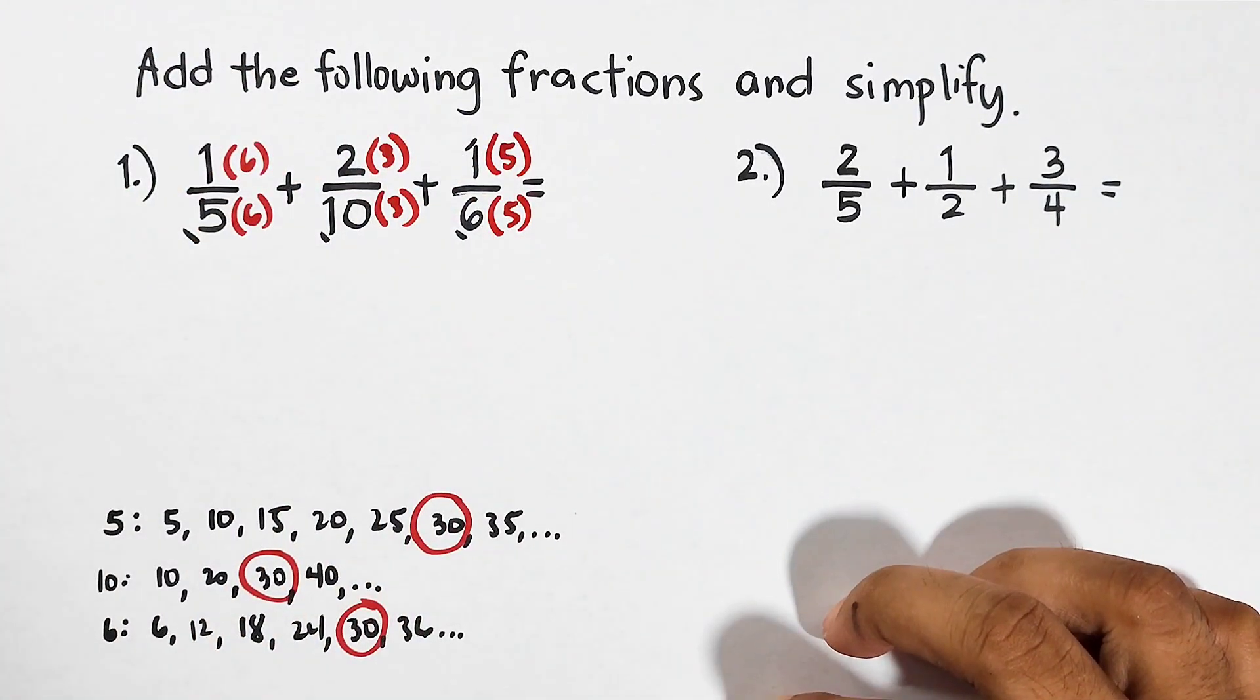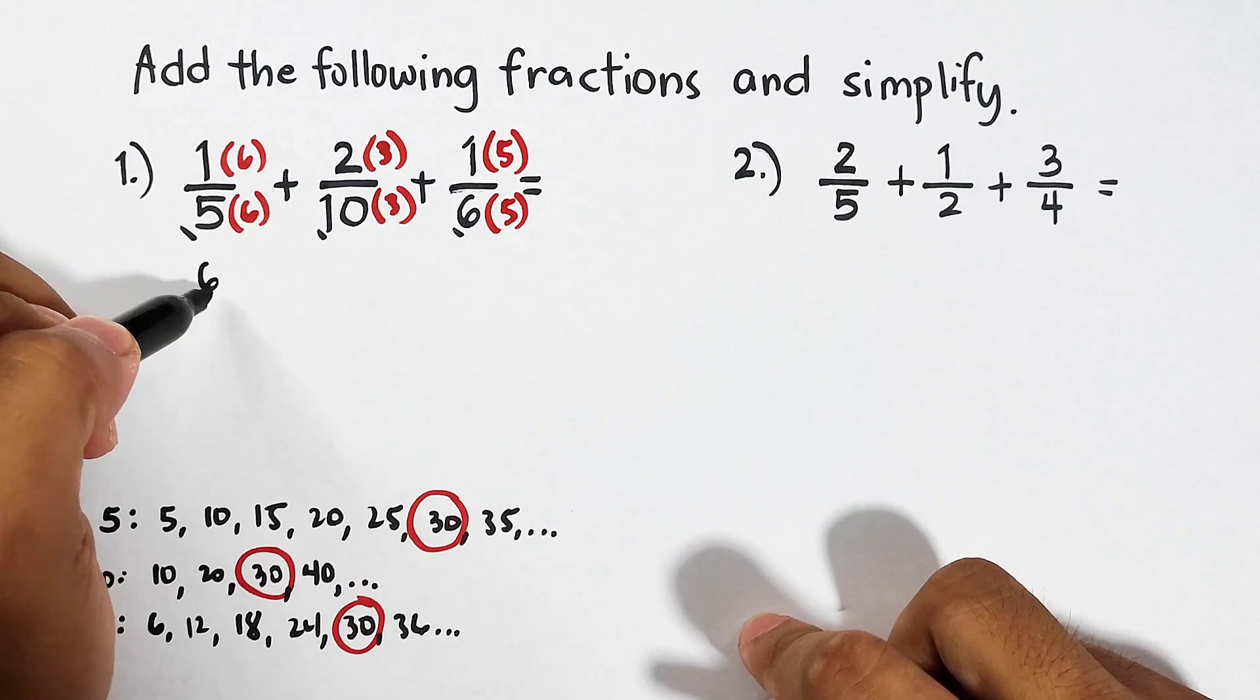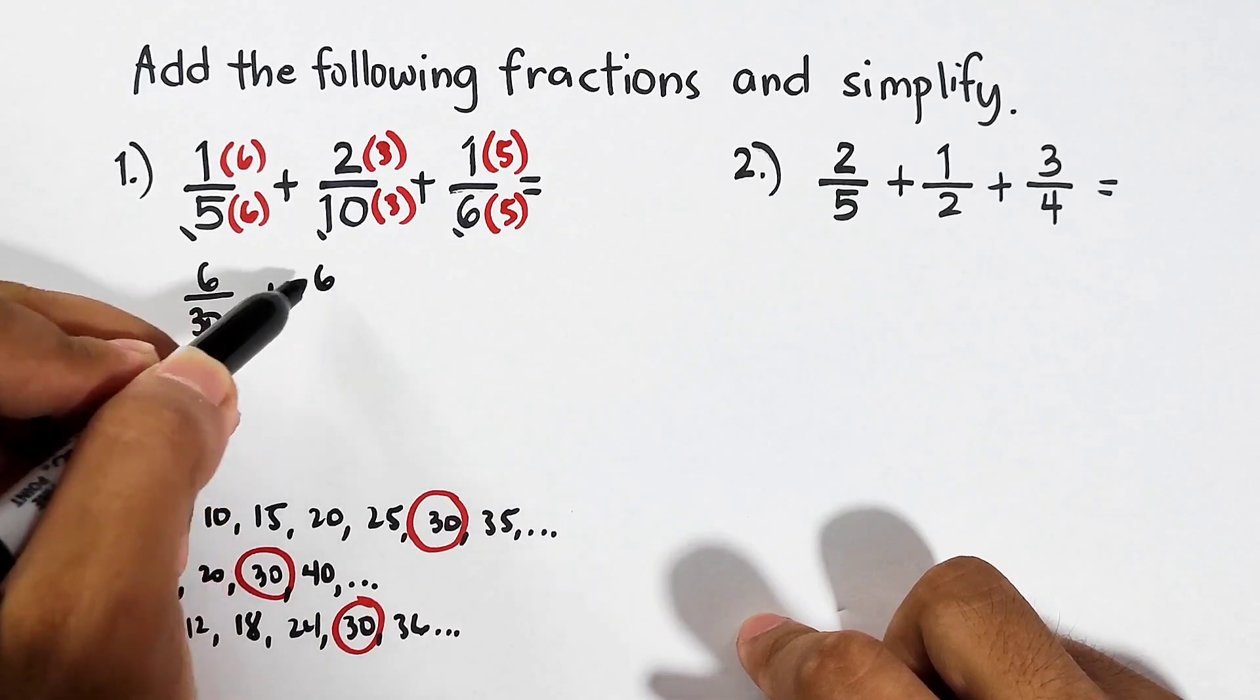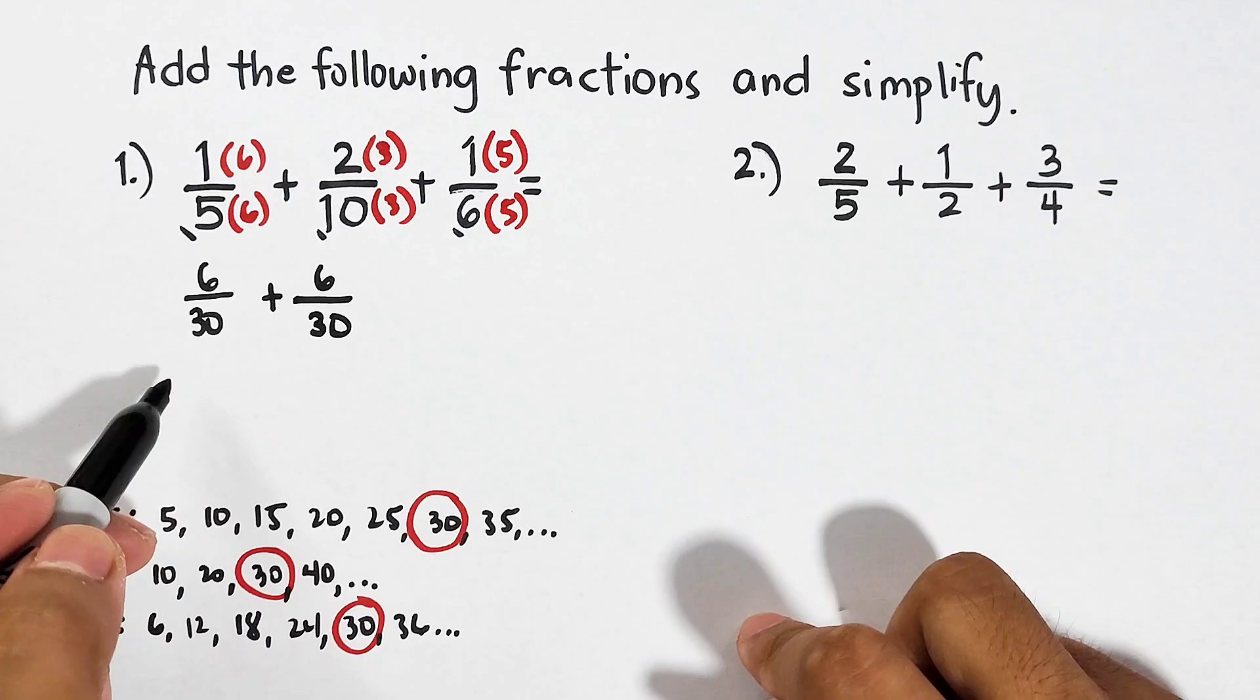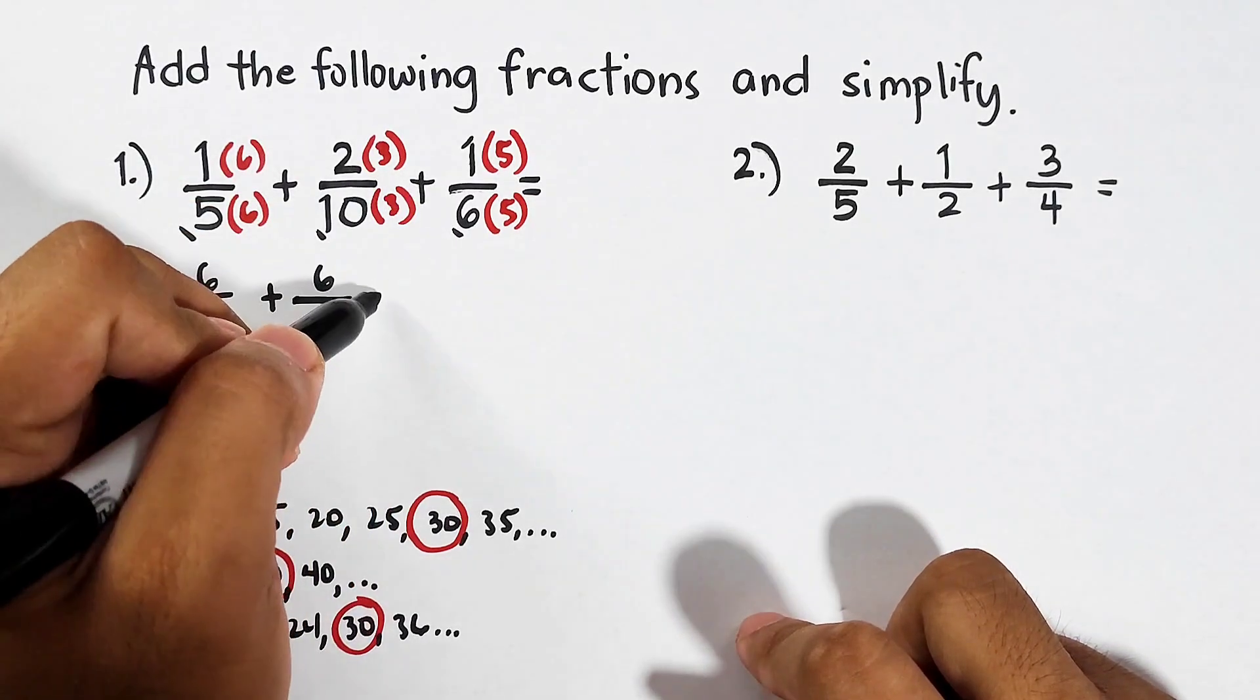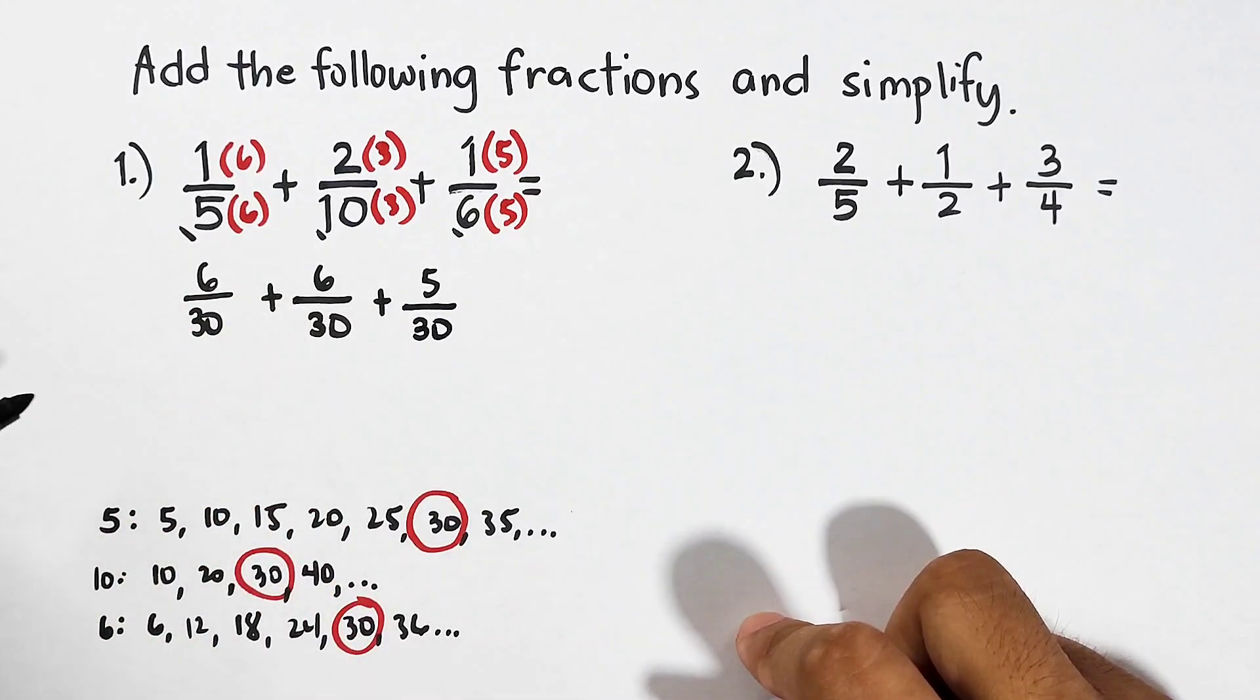So what will happen, it will become like this: 1 times 6 is 6 over 30, plus 2 times 3 is 6 over 30. As you can see, they have the same denominators because it's easier for us to add fractions if they have similar or same denominators.